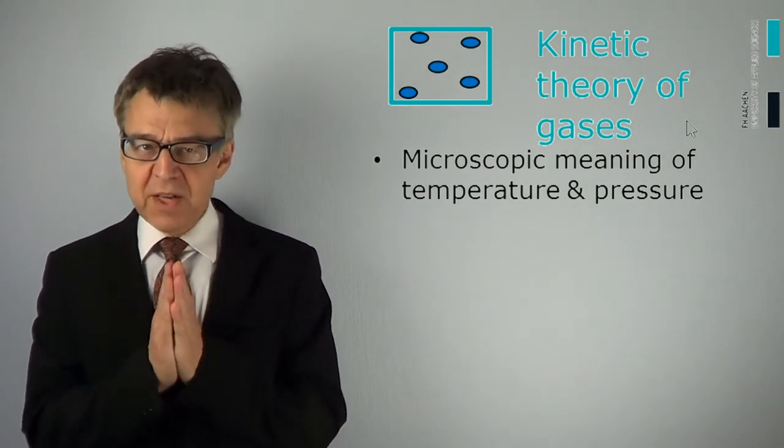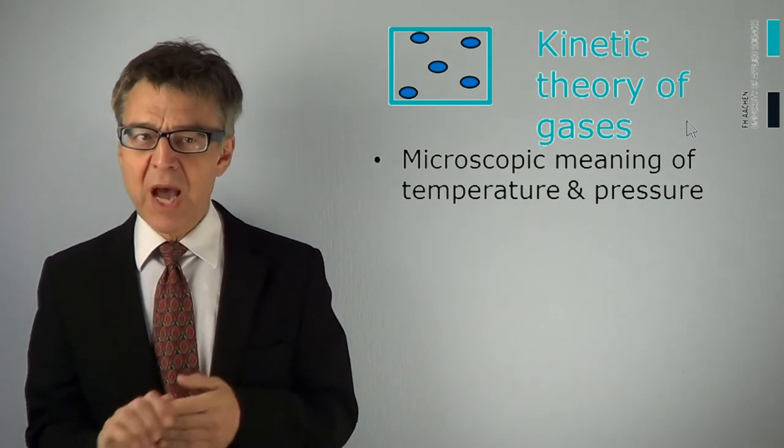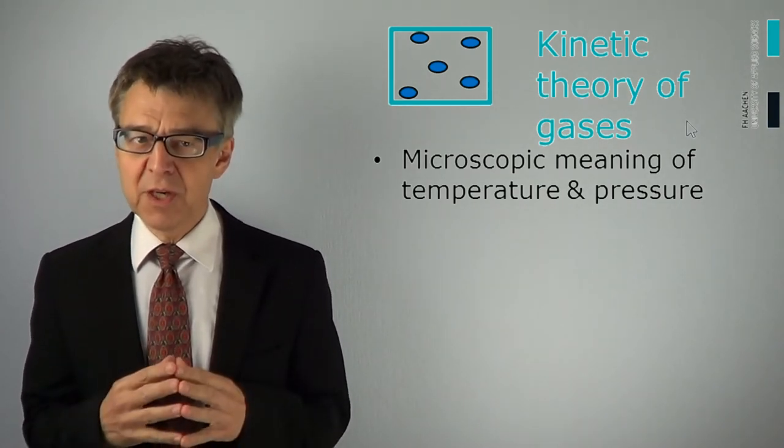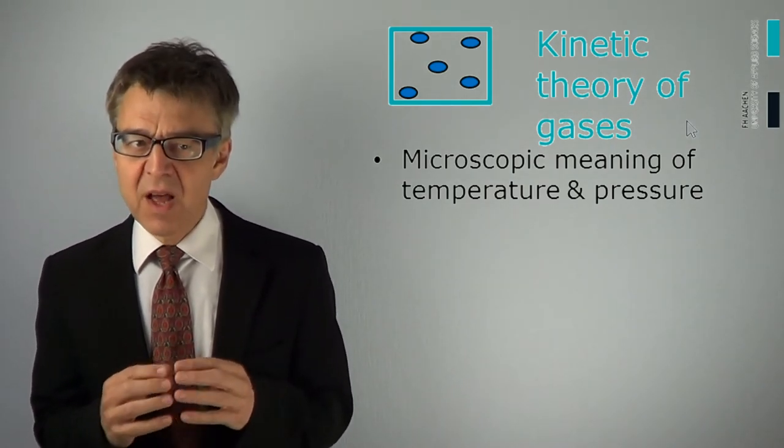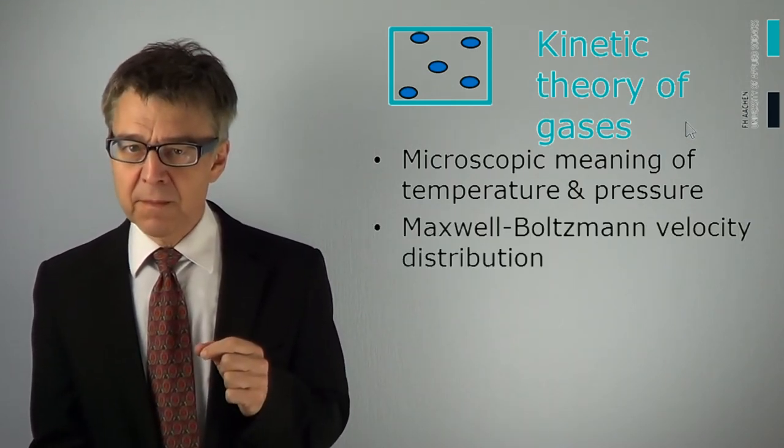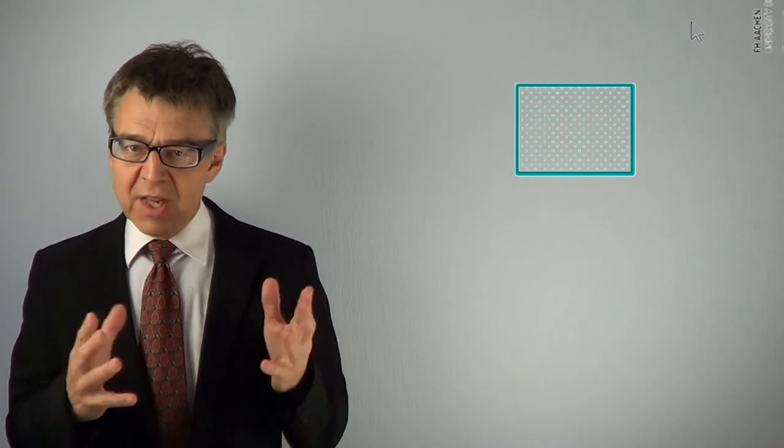We have seen that the state of a gas can mathematically be described by the equation of state PV equals nRT. We will now try to explain the properties of a gas on the basis of model concepts. The ideal gas law describes the gas macroscopically, gives a relation between its state variables mathematically. The kinetic theory of gases describes a gas microscopically, a conceptual model.